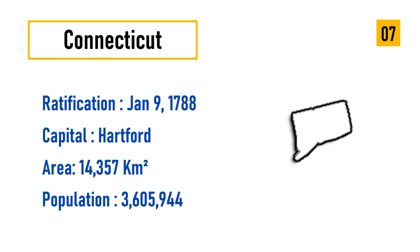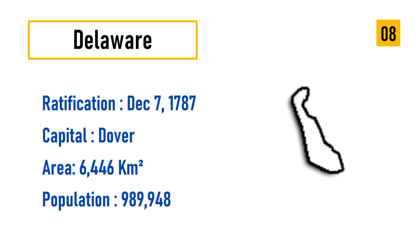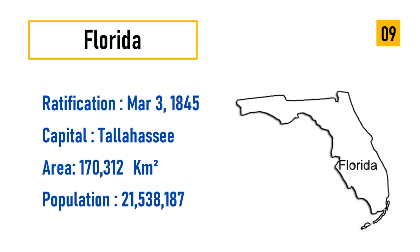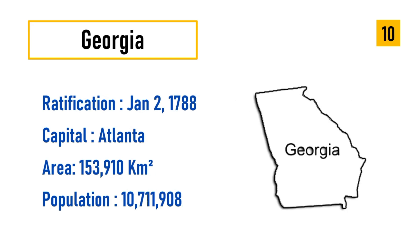Number seven: Connecticut, ratification January 9, 1788, capital Hartford, area 14,357 square kilometers, population 3,605,645. Number eight: Delaware, ratification December 7, 1787, capital Dover, area 6,446 square kilometers, population 989,948. Number nine: Florida, ratification March 3, 1845, capital Tallahassee, area 177,312 square kilometers, population 21,538,187. Number ten: Georgia, ratification January 2, 1788, capital Atlanta, area 153,910 square kilometers, population 10,711,908.